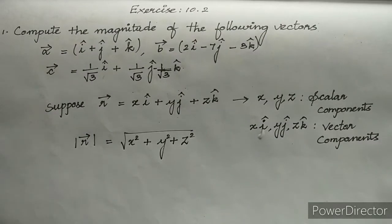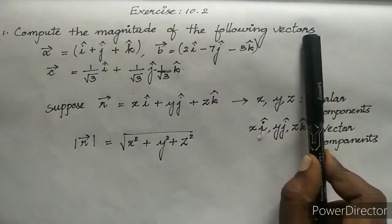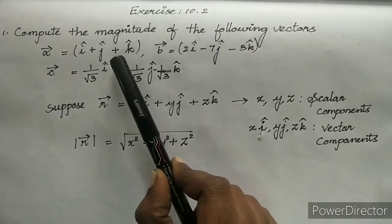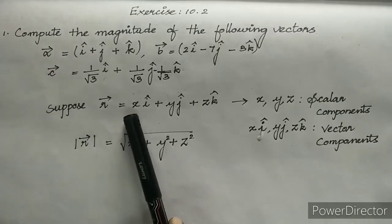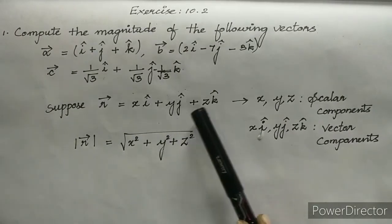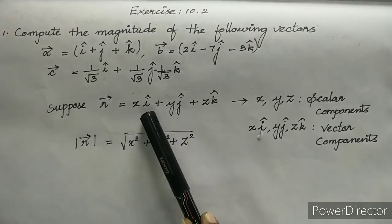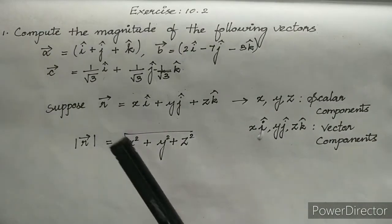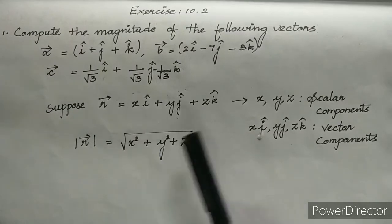Hello students. In this video, we will learn exercise 10.2. Question number 1: compute the magnitude of the following vectors. Here we are given with 3 vectors — A vector, B vector, and C vector. We are going to compute magnitude for these 3 vectors. We already know that if R vector is equal to X I cap plus Y J cap plus Z K cap, then X, Y, and Z are scalar components of R vector, and X I cap, Y J cap, and Z K cap are vector components of R vector. Then its magnitude will be the square root of the sum of squares of scalar components.